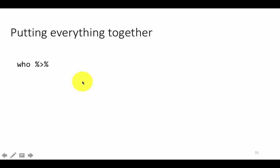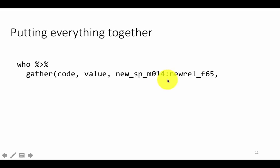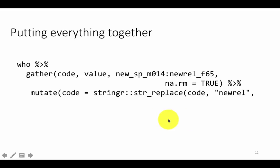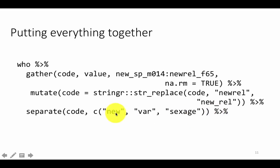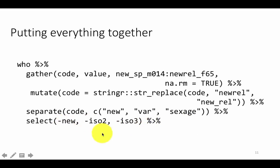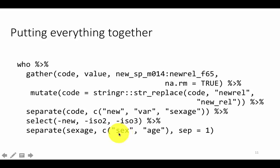Then we need to separate sex_age — values like F1524 or M014 — into a gender column and an age range column separately. We do that using sep=1, meaning separate after one character, putting 'F' into sex and '1524' into age. In reality you would do everything in one shot using pipes: first gather all columns into a code column, then mutate to replace 'newrel' with 'new_rel', then separate code into new, type, and sex_age, then select to remove redundant columns using minus signs, and finally separate sex_age into sex and age. That is the complete cleaning process, and we can assign the result into another data frame for further processing and analysis.